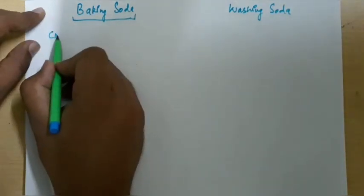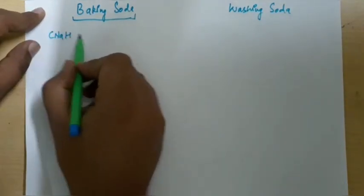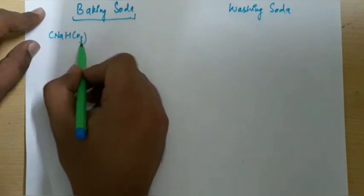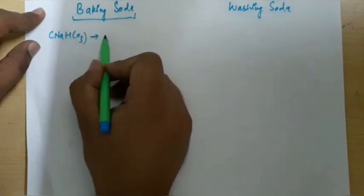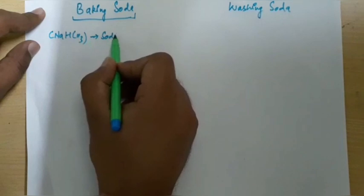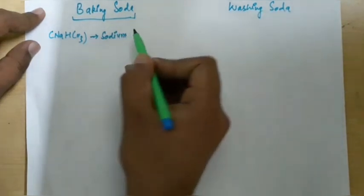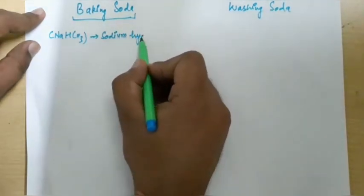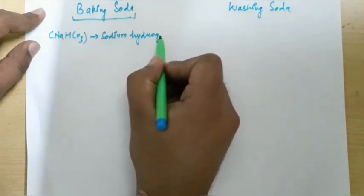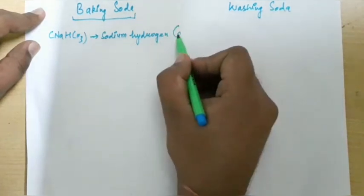Baking soda, its chemical formula is NaHCO3. It is called Sodium Hydrogen Carbonate.